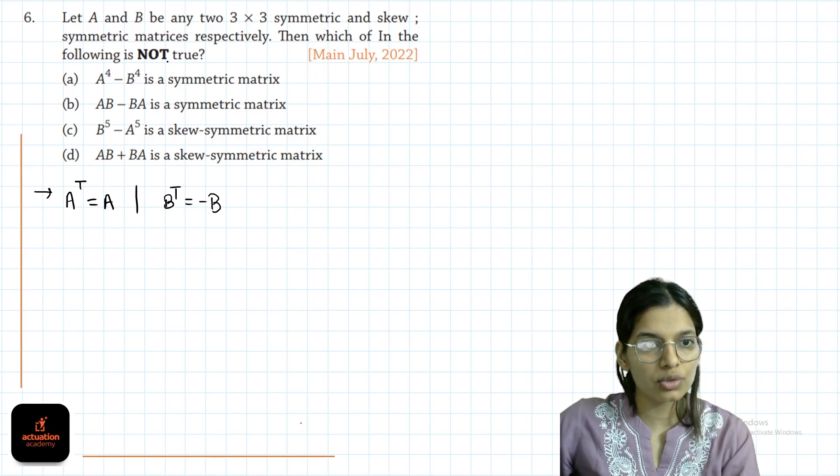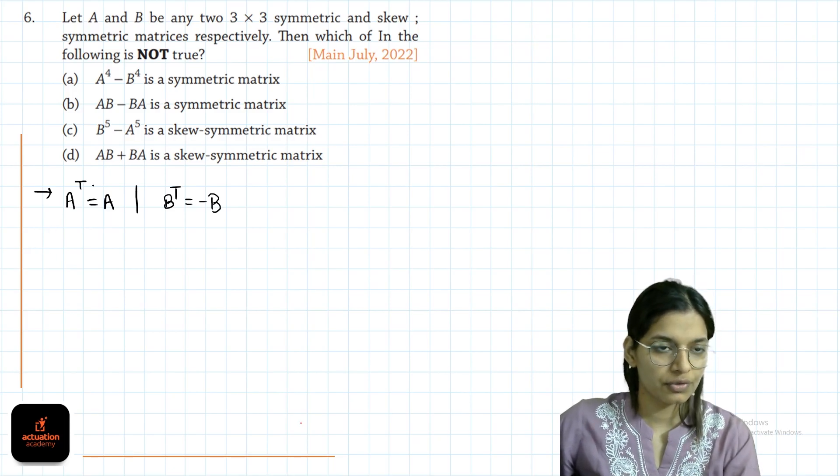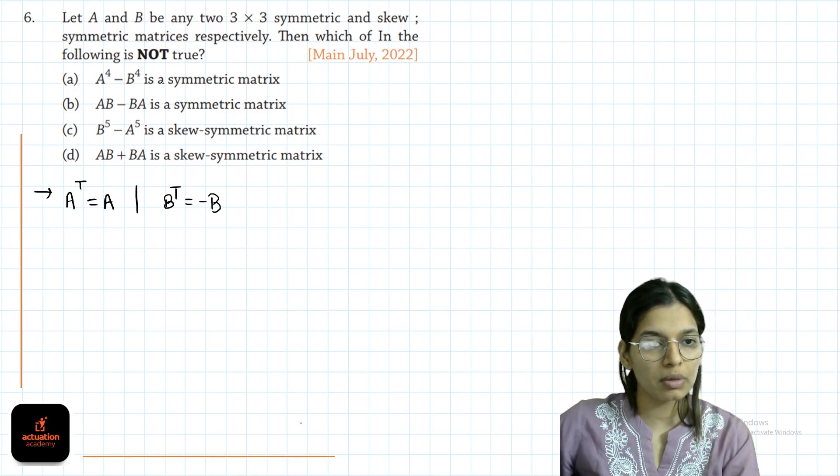Then, which of the following is not true? We have to find the statement that is not true. First, what is A power 4 minus B power 4 is symmetric matrix. How do we check symmetric? How do we check the matrix?